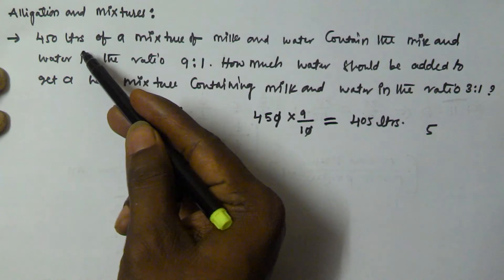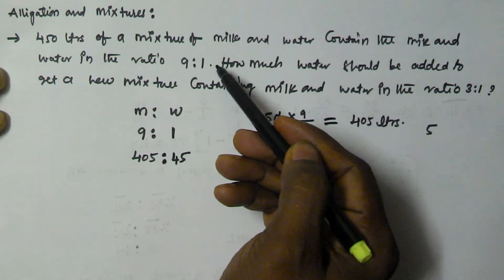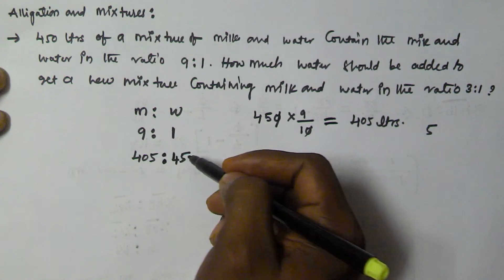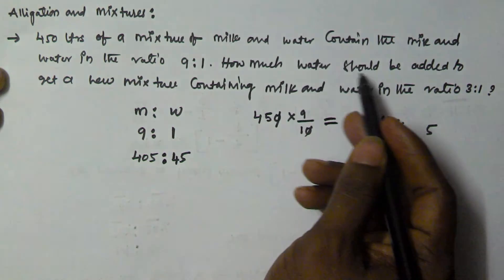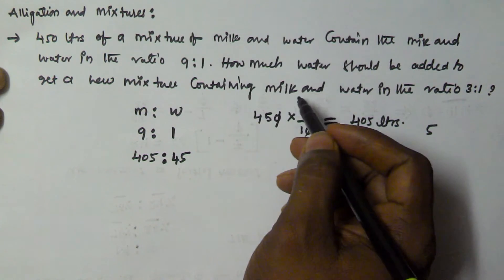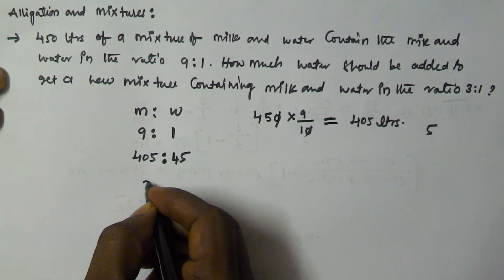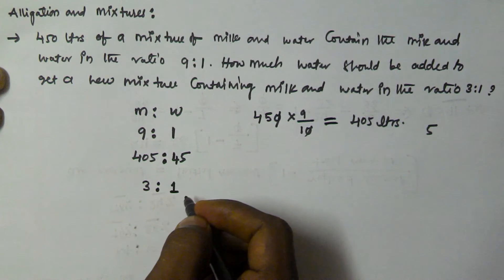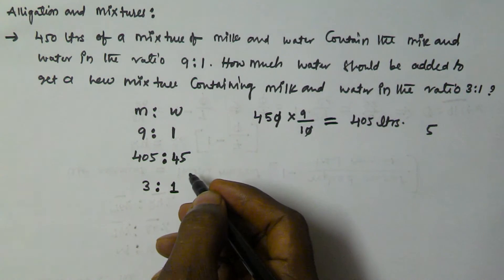So out of 450 liters, the mixture of milk and water contains milk and water in the ratio 9:1. That means 405 liters of milk and 45 liters of water. So how much water should be added to get a new mixture containing milk and water in the ratio 3:1?